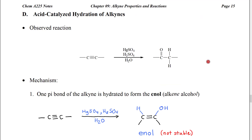When we discussed the reactions of alkenes, we also talked about acid-catalyzed hydration. We can do an acid-catalyzed hydration of alkynes. However, it turns out that we get a different product from what we might expect. In order to do acid-catalyzed hydration, we have to use mercury sulfate, sulfuric acid, and water.